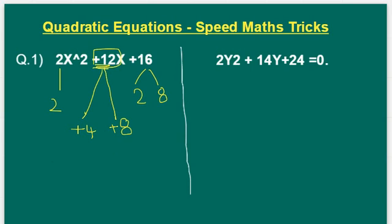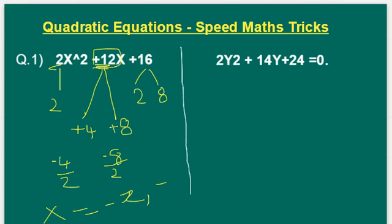Then change the signs of these numbers. Plus 4 becomes minus 4 and plus 8 becomes minus 8, then divide by the coefficient of x², which is 2. Therefore, x = −2, −4.